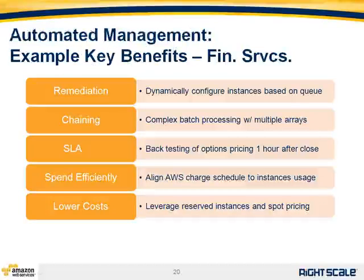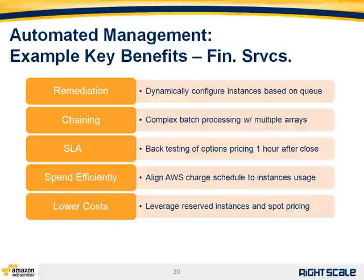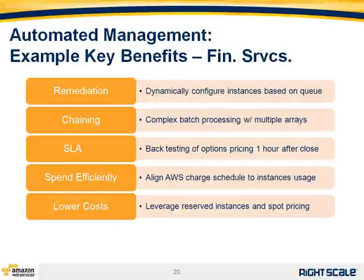Key benefits of this automated management: First, remediation — the RightScale daemon runs on all instances within Amazon, and RightScale keeps an eye on and adjusts the environment based on various attributes of the queue. You can dynamically configure instances based on what's happening in both the instance and the queue. We also have automation around complex batch processing, known as chaining — where one batch process's outputs become the inputs of a second process. This involves multiple arrays, which you may want in different regions within Amazon, and RightScale has automation that makes that very easy.